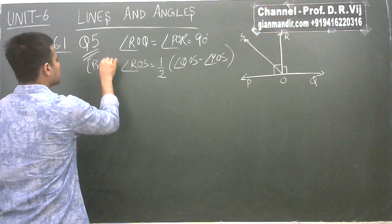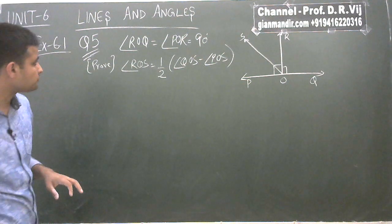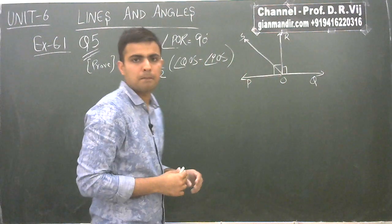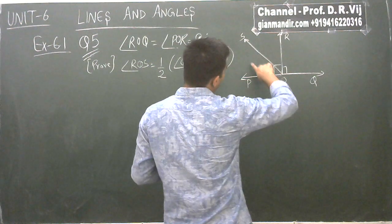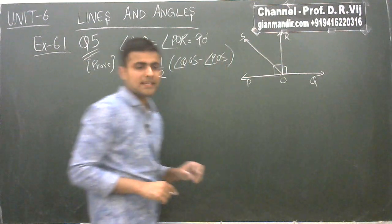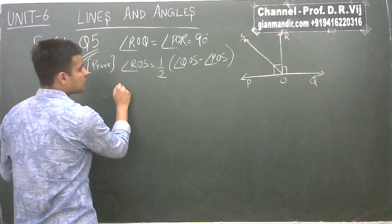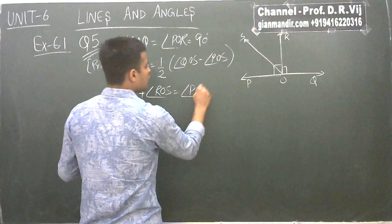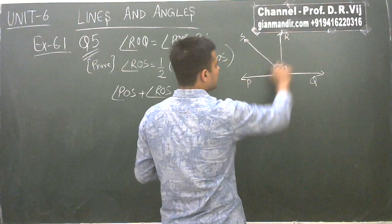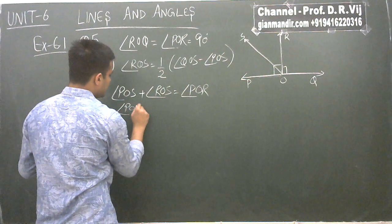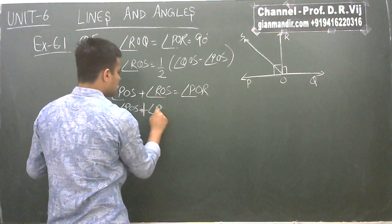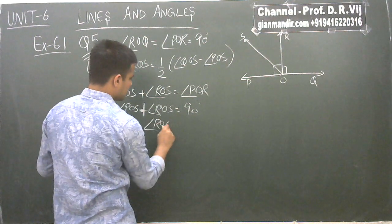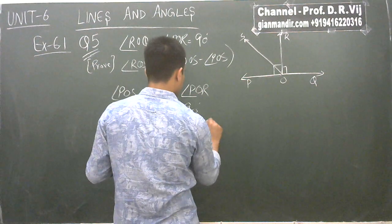How do we start? Since POR equals 90 degrees, angle POS plus angle ROS equals angle POR, so angle POS plus angle ROS equals 90 degrees. Therefore angle ROS equals 90 degrees minus angle POS. This is our first equation.